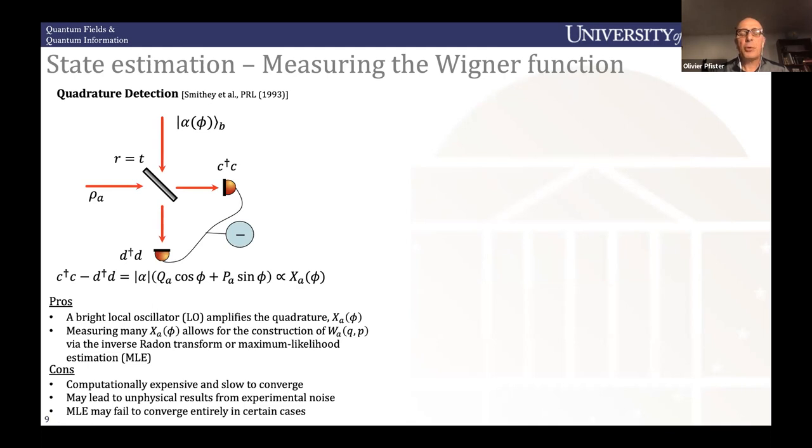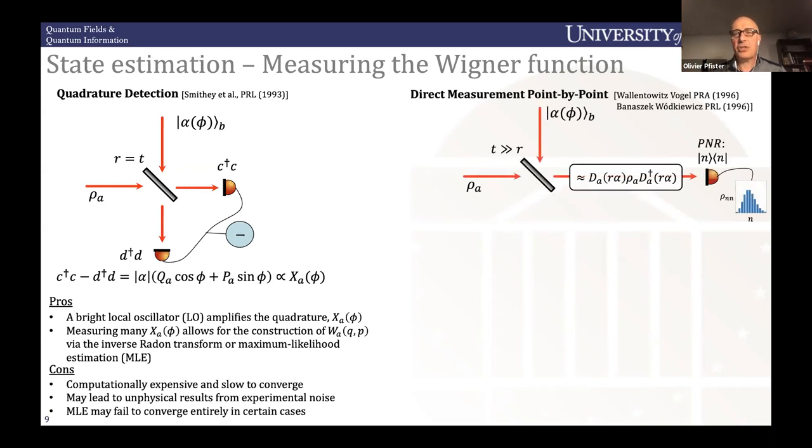So particularly reconstructing the Wigner function. So the first proposal for doing that used quadrature detection. So quadrature detection, you had your unknown column state here. You had the local oscillator here, which is phase tunable. And you do a balanced homodyne detection. And that was proposed by Michael Raymer and his group in 93 and demonstrated at the same time. And this is very nice because it basically measures a slice in the Wigner function in phase space. And it's really a tomographic measurement. And then you can, with an inverse radon function, a transform, you can reconstruct the Wigner function. The problem is that it works very well. Lots of groups are doing that in quantum optics very, very well. But it's fairly numerically intensive as a reconstruction.